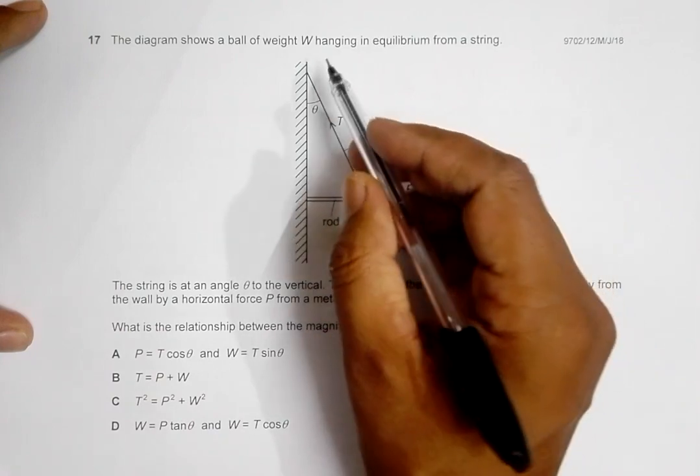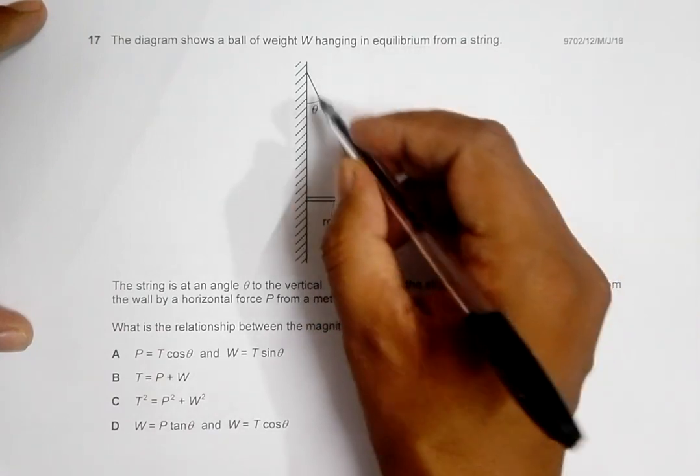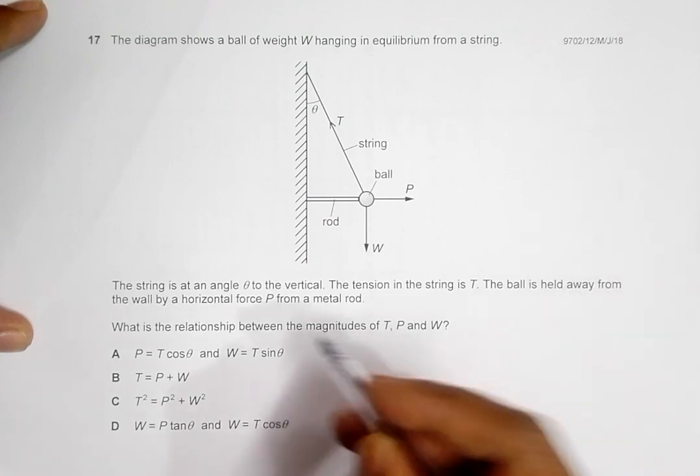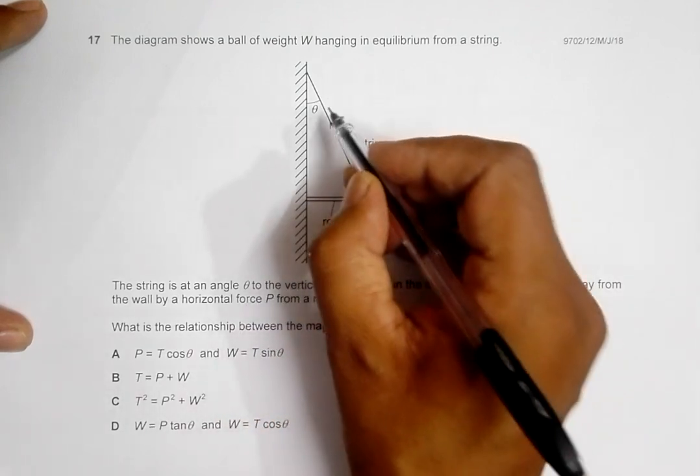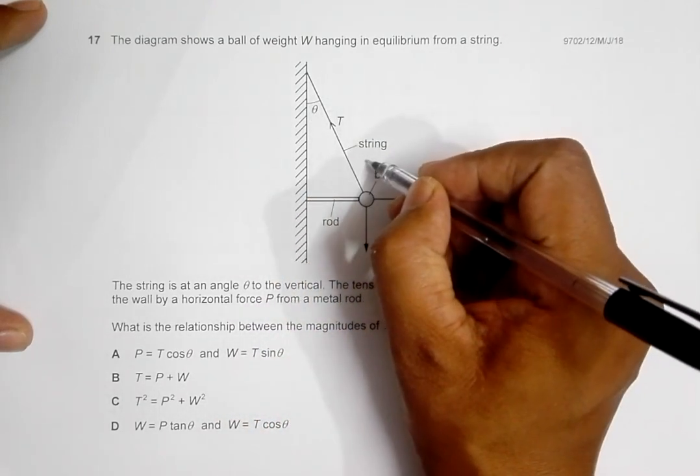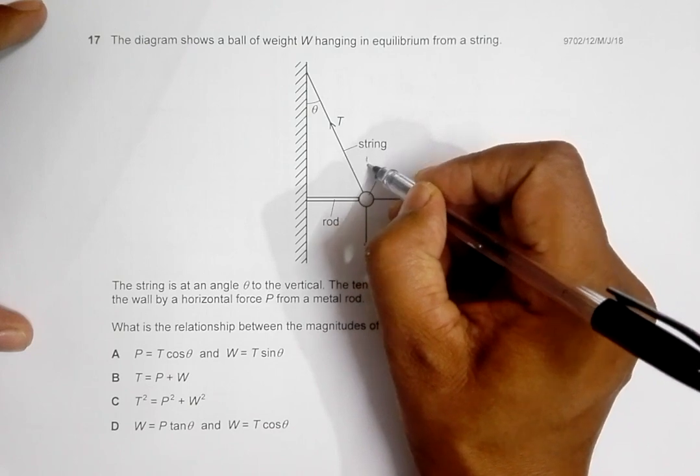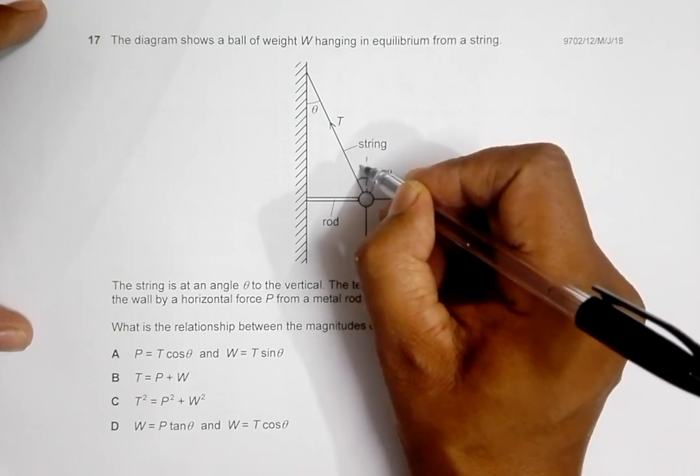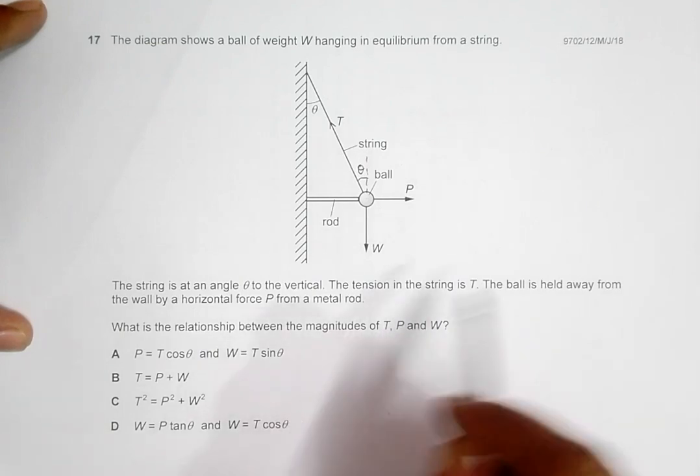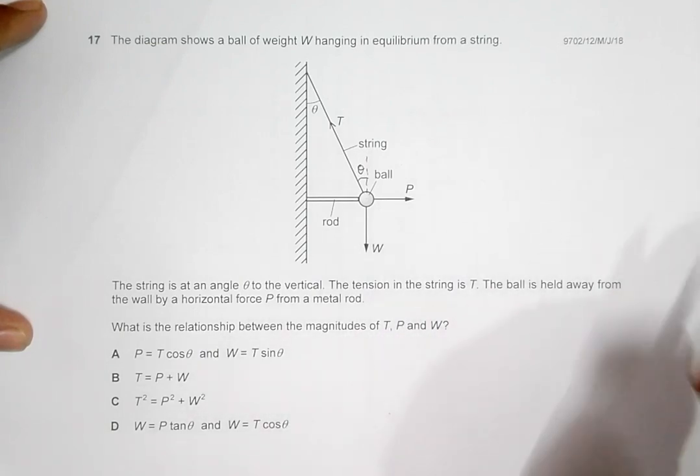This is the ball with weight hanging in equilibrium from a string. This is the string. The string is at an angle theta with the vertical, so this angle is theta. In other words, if I draw a vertical line here, this angle is also theta.